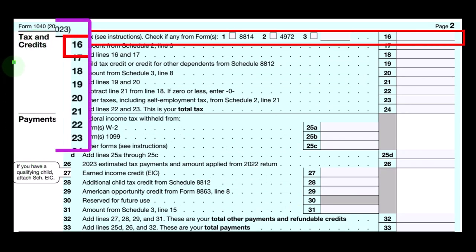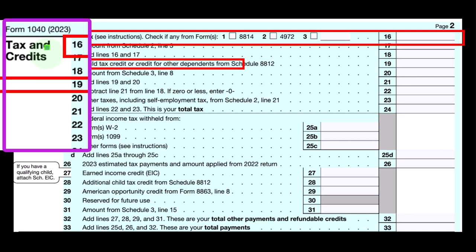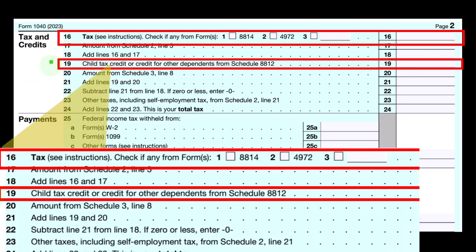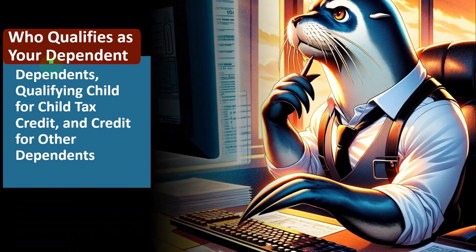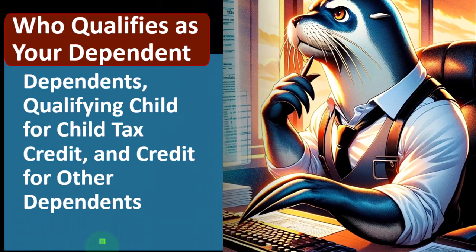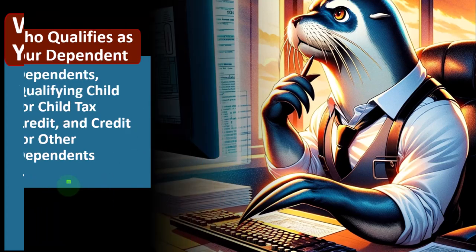On the tax returns and the credits section, the tax calculation could be impacted. The child tax credit is the main credit that probably comes to mind. So, who qualifies as your dependent? Dependents — qualifying child for child tax credit and credit for other dependents. Let's take a look at a worksheet, actually going to the Form 1040 instructions here.